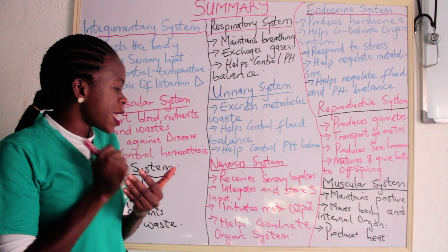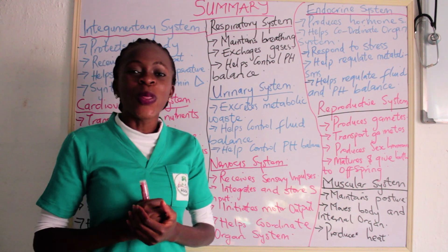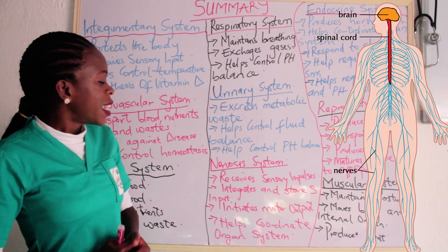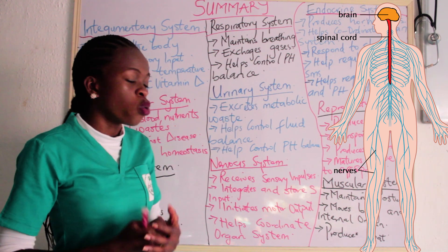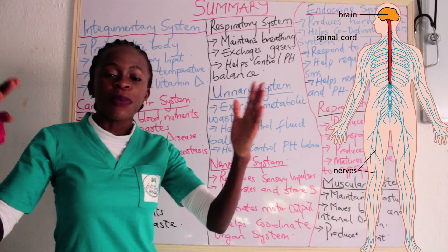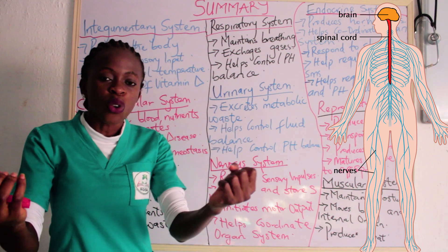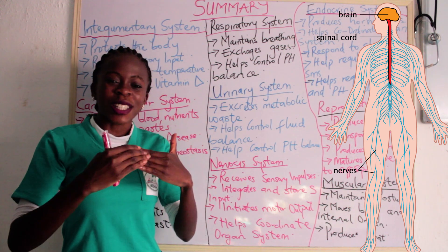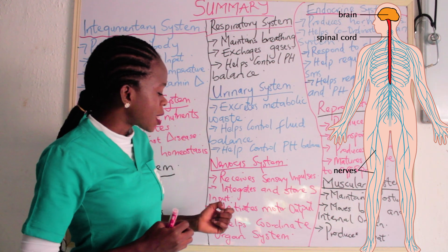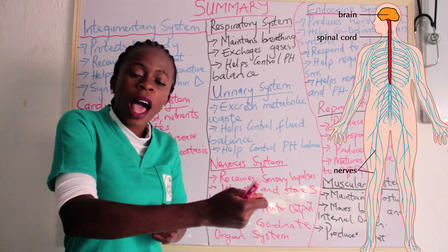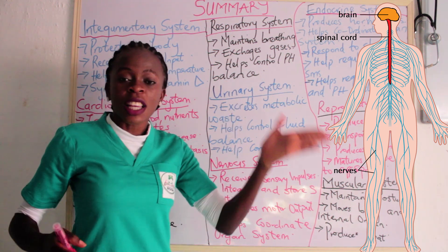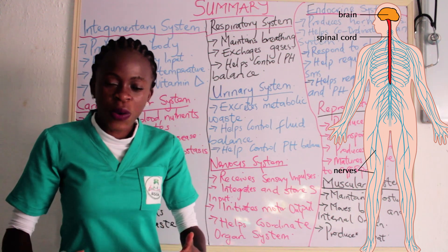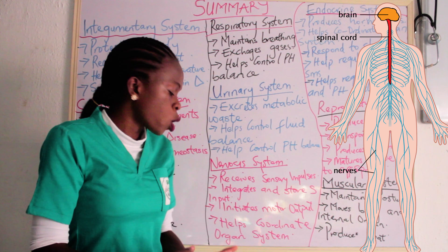The nervous system has to do with the brain and its associated organs. It helps to receive impulses generated all over the body, integrate those impulses, and initiate motor output. We have both sensory nerves and motor nerves. The nervous system receives sensory impulses, integrates them, initiates motor outputs, and helps to coordinate the organ systems.